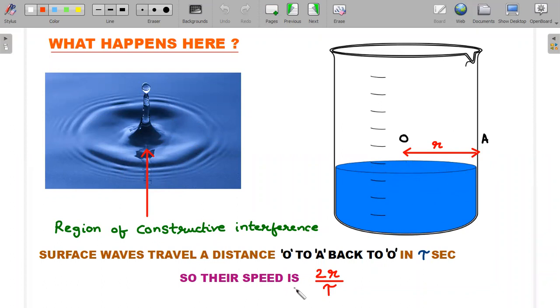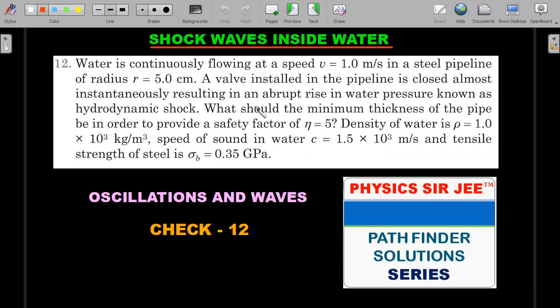The surface waves travel from distance O to A and back to O in τ seconds as mentioned in the question. So the 2r distance has been taking τ time. Therefore, the speed of those surface waves can be easily estimated as 2r/τ. So it's a basic question. Now let's move on to the second one, which is the shockwave understanding.